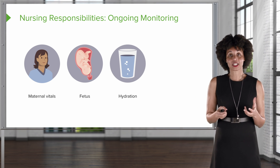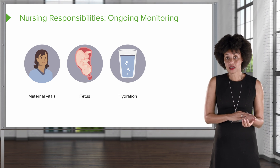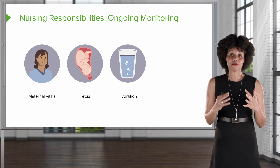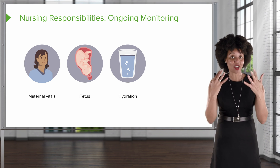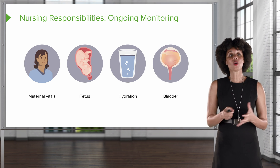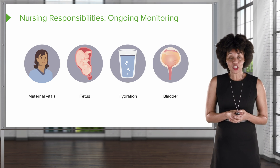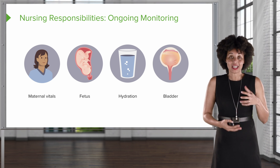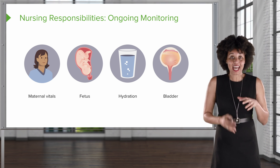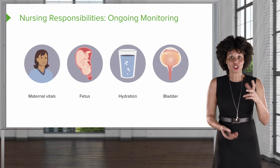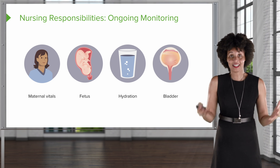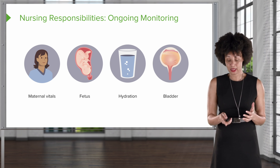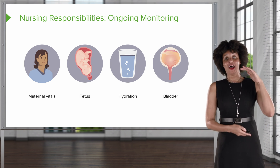We also want to make sure the client is well hydrated. Some clients will have an IV; some will take liquids by mouth. We have to make sure the patient is well hydrated so they can continue through labor. We also want to monitor the bladder — remember, the bladder is a big balloon and the fetus is sitting on top of it. If the balloon is full, the fetus can't come down. So we check in with the client at least every two hours to make sure the bladder stays empty.